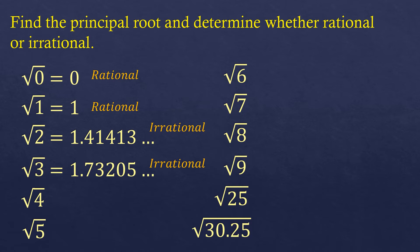For the square root of four, we are taking the principal root so we consider only the positive value. Two times two is four, so the principal square root of four is positive two, which is a rational number.